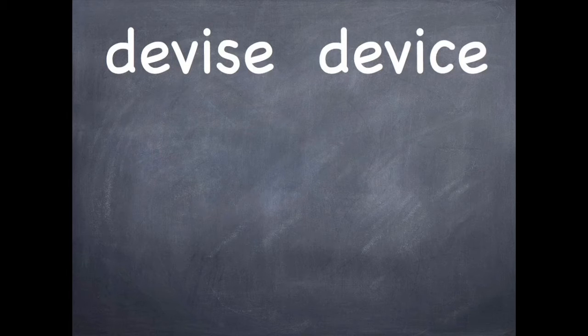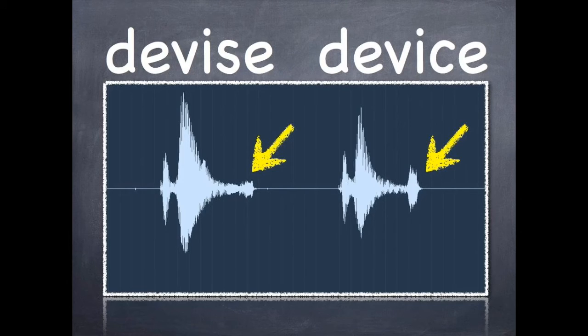我们看最后一个字组，左边那个字我们念作devise。而右边那个字的字尾，要是没有声音，这个字念作device。那我们请老师为我们示范devise, device。这个字尾的黄色箭头所指的部分真的不太一样耶。